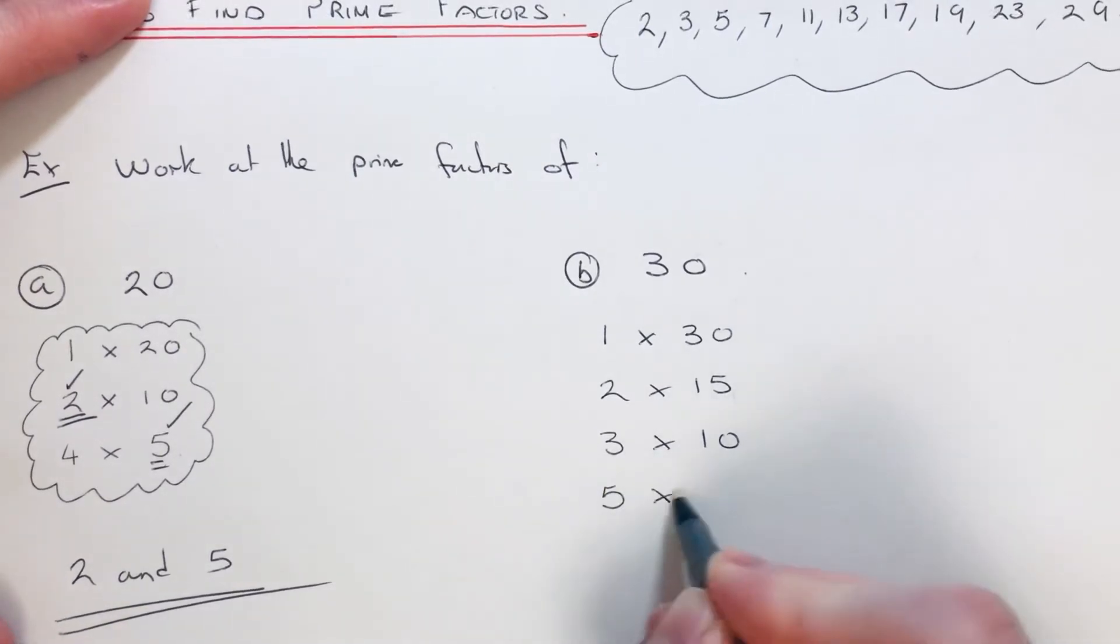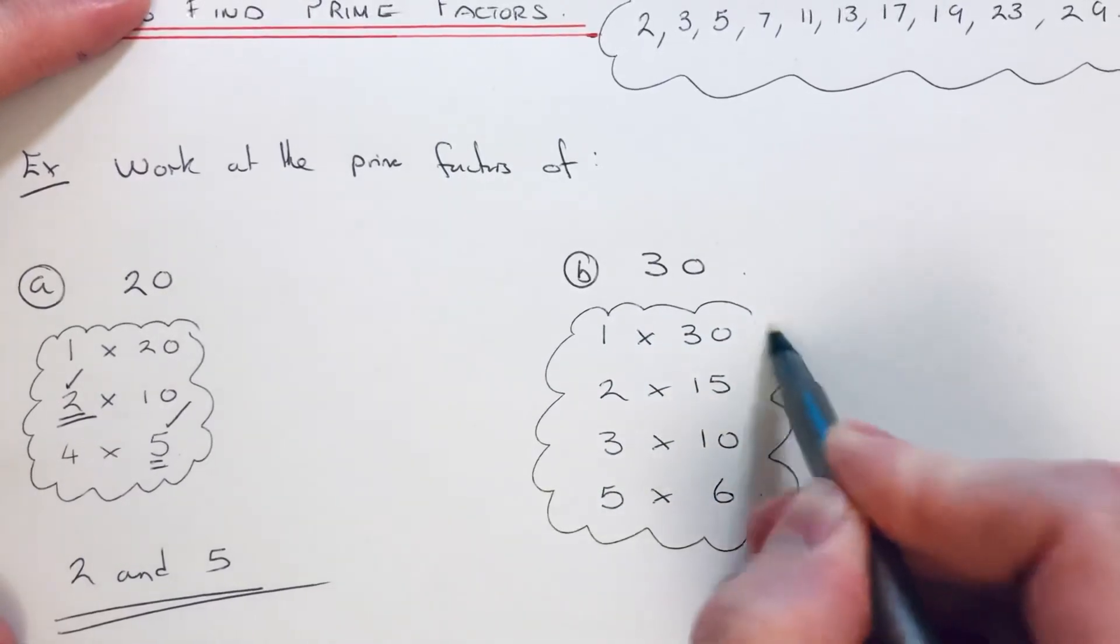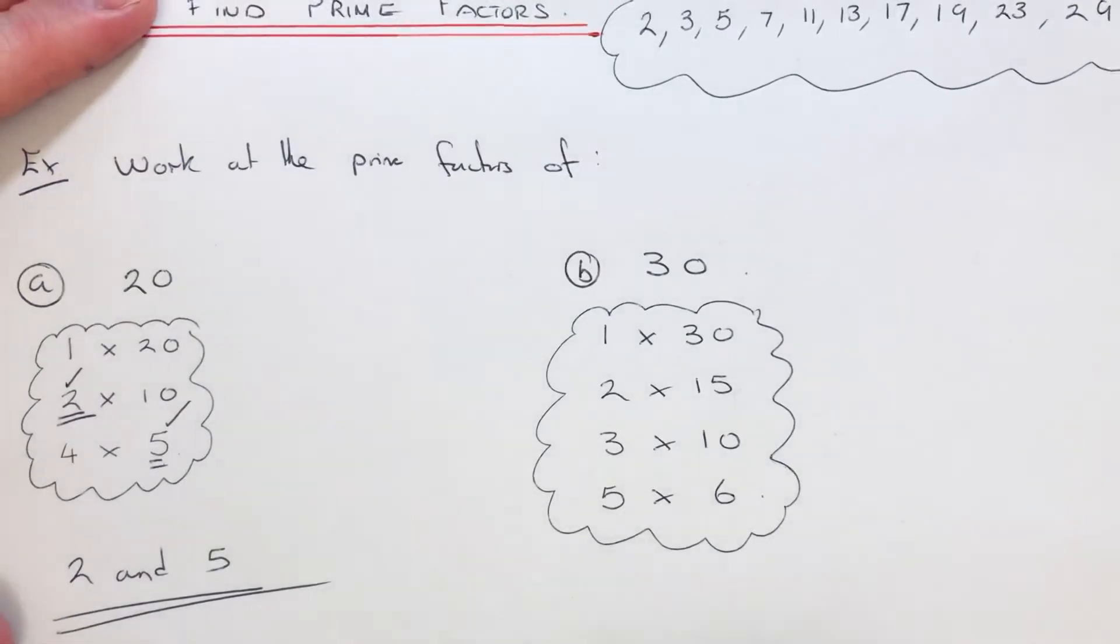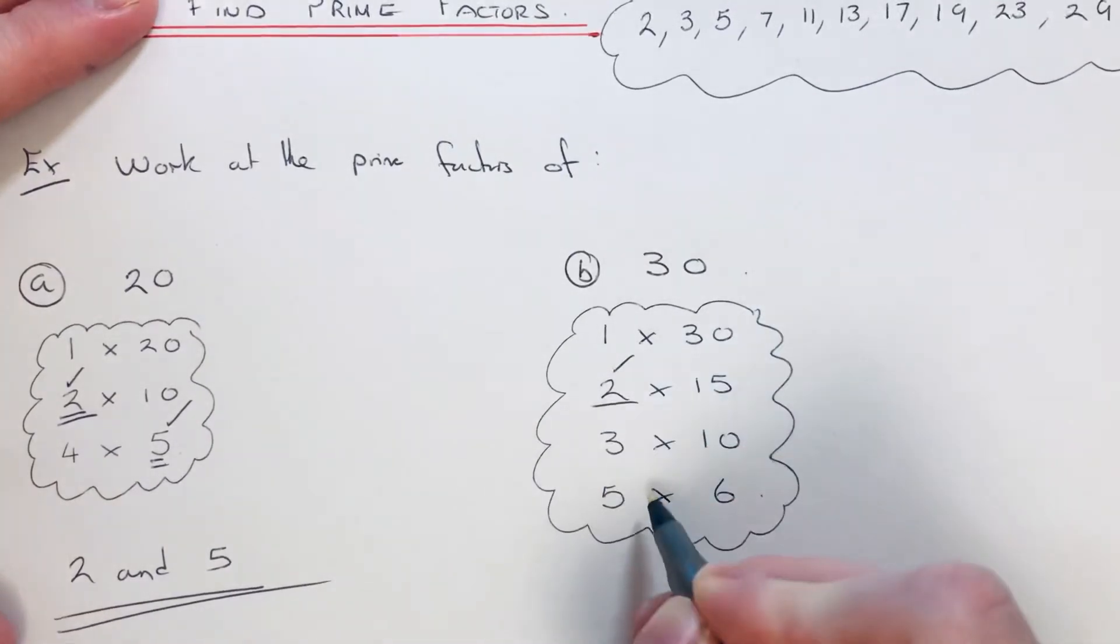All these numbers here are the factors of 30. Now we need to decide which ones are also prime. We've got 2, we've also got 3, and we've got 5.